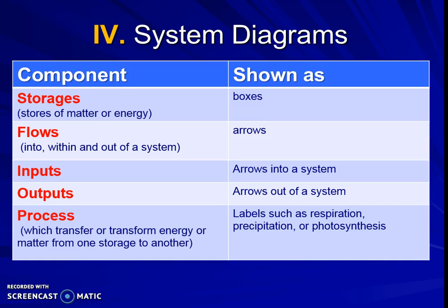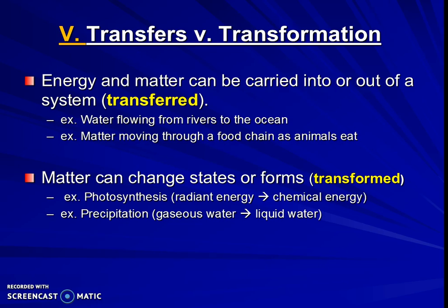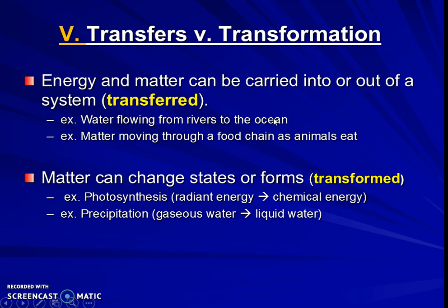These flows happen for different reasons called transfers or transformations — both are key terms. A transfer is when energy or matter purely moves without changing form. For instance, water flowing from a river to the ocean is still water — it's just moving. Matter moving along a food chain is just being transferred; that carbon is still carbon.